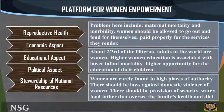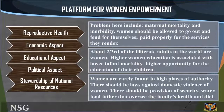Educational aspects. About two-thirds of the illiterate adults in the world are women. Higher women's education is associated with lower infant mortality and lower fertility, as well as higher opportunity for the education of their children. Political aspects. Social and legal institutions still do not guarantee women equality in human rights — that is, the right to vote and to be voted for. Women are rarely found in high places of authority where decisions are made regarding the constitution of the country. Therefore, they are exposed to violent attacks and oppression. There should be laws against domestic violence against women and they should be allowed to take action when cases are brought up.